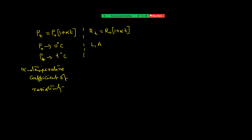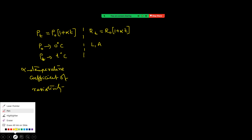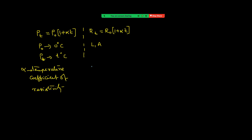Here α is the temperature coefficient of resistivity, and that of resistance. Both are equal if the change in dimensions is small. Alpha is positive for metals (conductors) and negative for semiconductors.